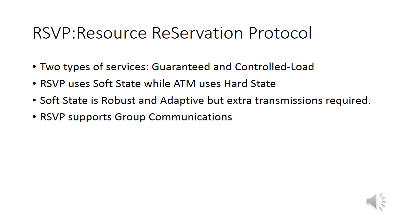ATM uses hard state, which persists until it is released, while soft state persists only for a moderately short interval and is refreshed often. Soft state simplifies signaling, is adaptive and robust, but its only disadvantage is the extra transmission needed to refresh the state. RSVP is designed to support group communications as it is receiver-oriented — refreshing of soft state reflects updates to group members and reservations are per session.